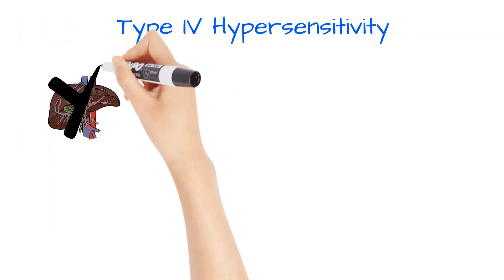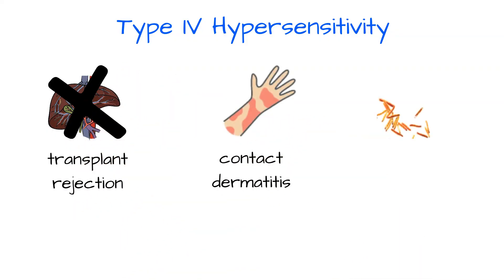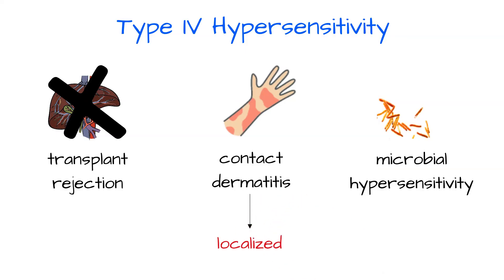Examples include transplant rejections, contact dermatitis, and microbial hypersensitivity such as tuberculosis. The main difference between type 4 and type 1 hypersensitivity in regard to dermatitis is that type 4 is more localized and restricted to the area exposed to the allergen, whereas type 1 involves a more generalized, widespread amount of lesions. The delayed hypersensitivity reaction to tuberculosis is why TB skin tests are assessed 48 to 72 hours after the injection.